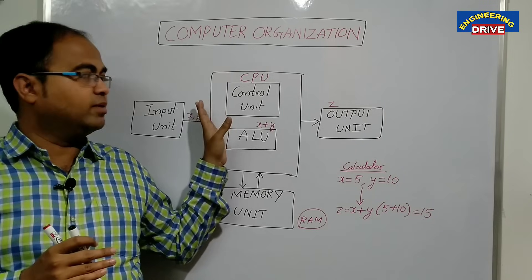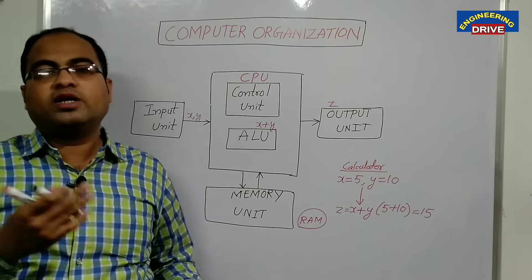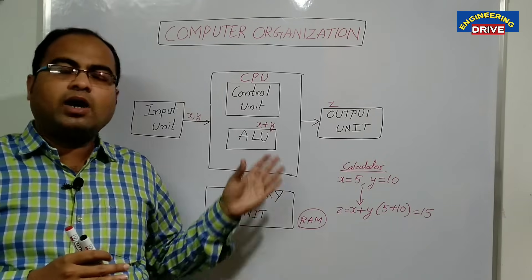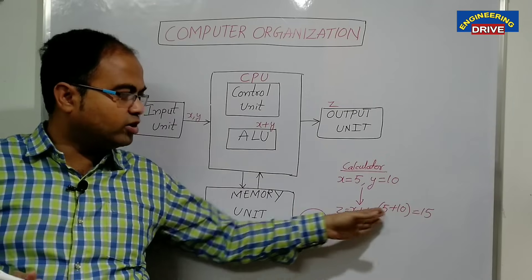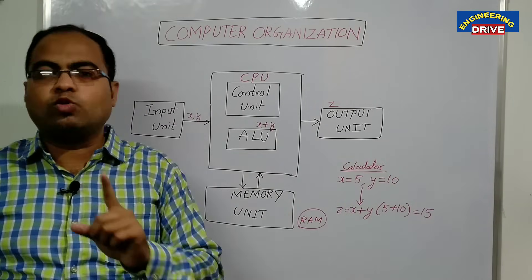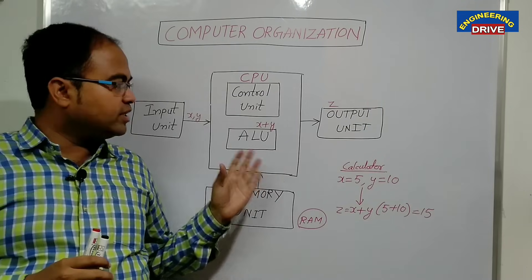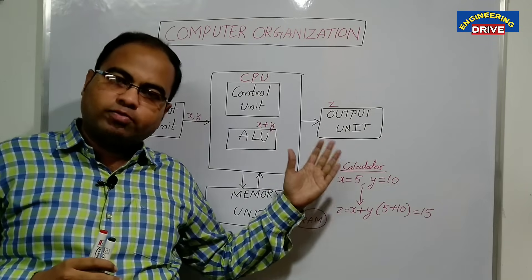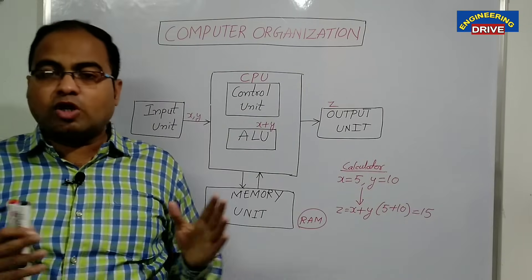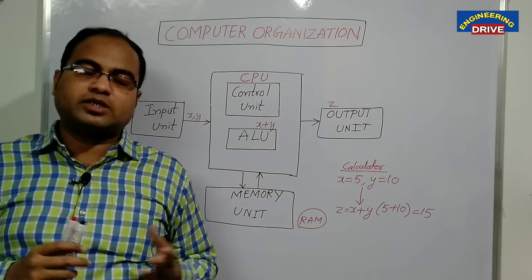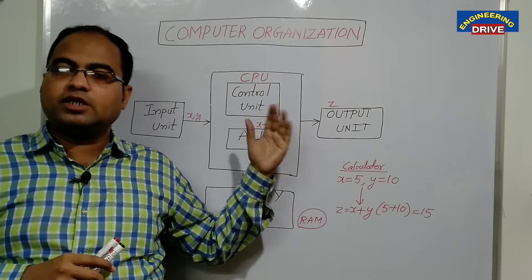Computer organization is nothing but how all these internal parts are organized and how they will work. In our next videos, we will discuss how our computer performs calculations. As we know, computers don't perform calculations directly on decimal numbers — the computer understands only machine language. Whatever data you supply will be converted into machine language, calculations will be done, and the result is converted back into a user-understandable format. We will discuss how that conversion, addition, and subtraction will take place.